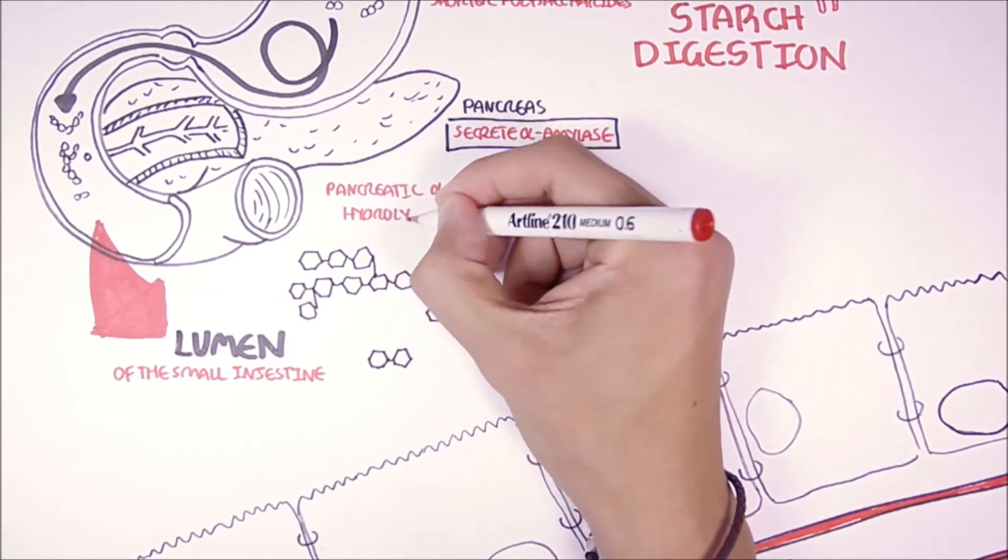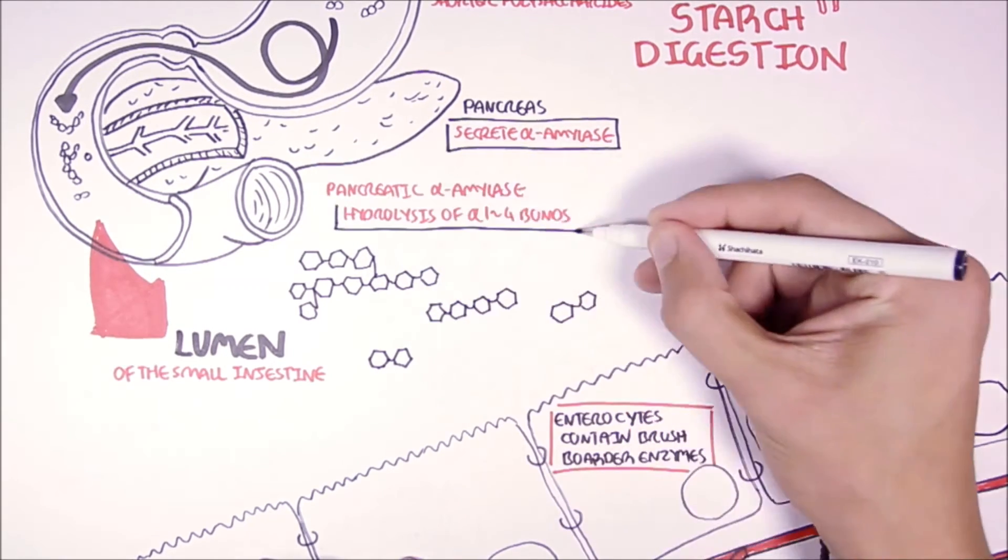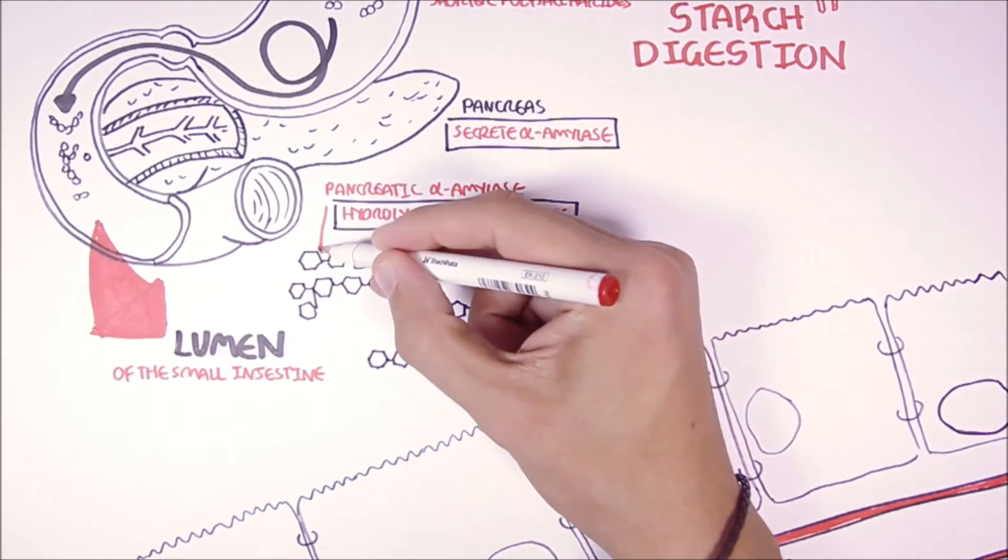So pancreatic alpha-amylase hydrolyzes the alpha-1,4 glycosidic bonds, breaking down the starch further.